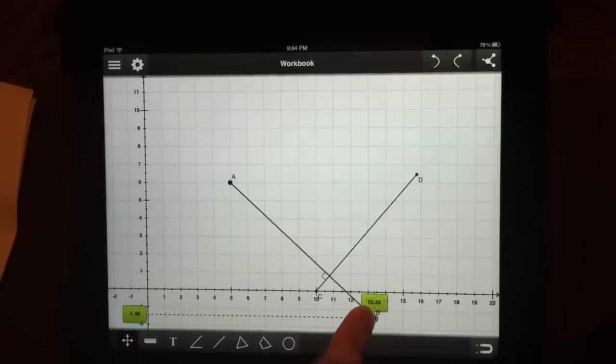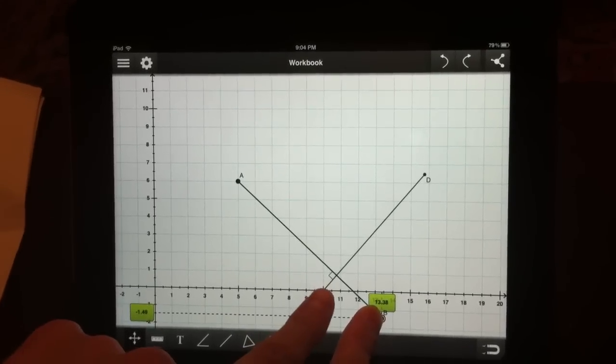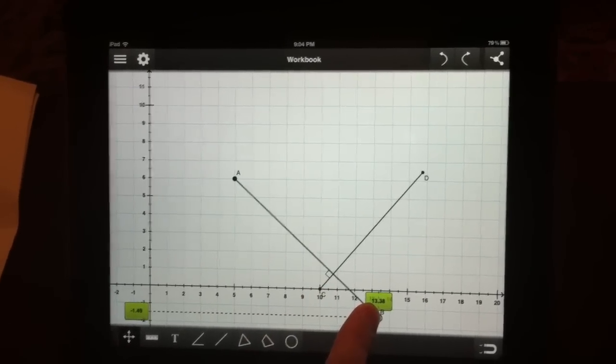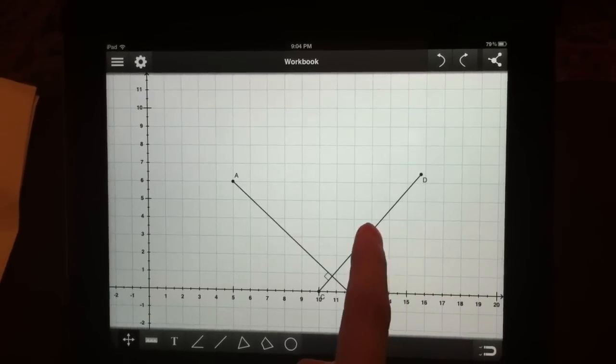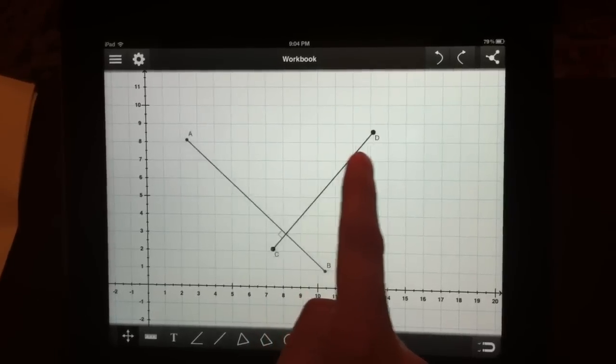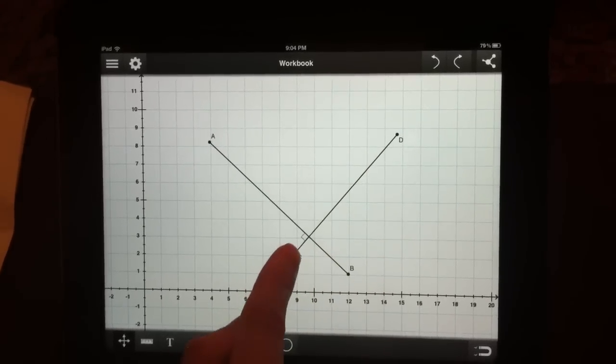And again, as soon as you can see the right angle mark, it means that the lines became perpendicular. Now if I move line CD, line AB stays perpendicular.